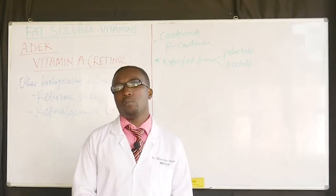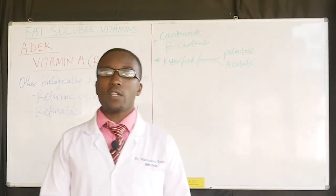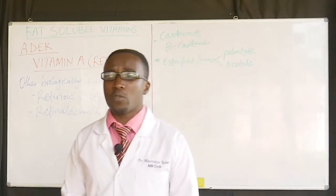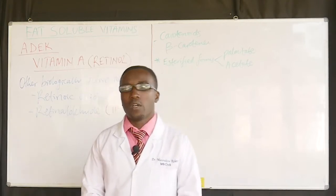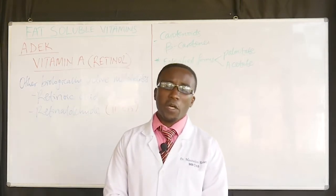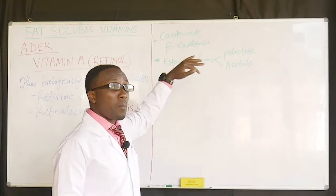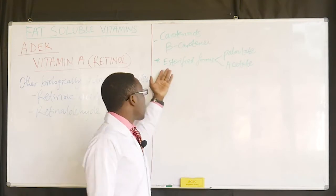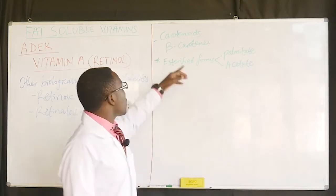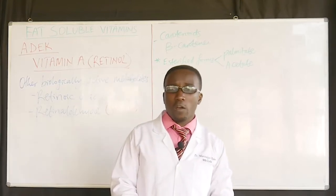Vitamin A is commercially available in esterified forms such as acetate and palmitate, which are more stable than other forms. More than 600 carotenoids in nature are known, and approximately 50 of which can be metabolized to Vitamin A. When you hear about carotenoids, they are abundant in the tubers we usually consume — carrots. Approximately a fifth of them can be converted into biologically active and available Vitamin A.